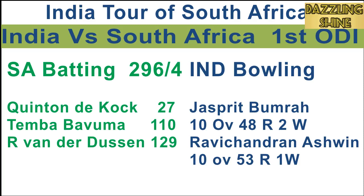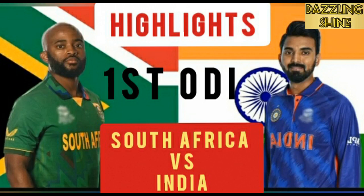Third ball of the last over, Shadul to Dusan — Dusan punishes it very nicely over the cow corner for another maximum. Second last ball of the innings — a low full toss — and Dusan plays it very nicely through the gap again over cow corner for four runs. A single on the last ball brings the end of South Africa's innings. 296 for four. India need 297 runs to win the match.